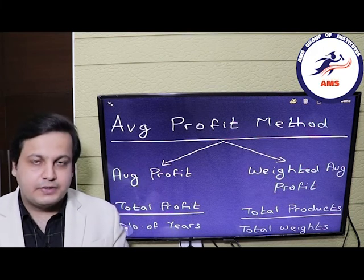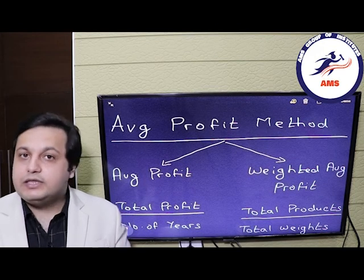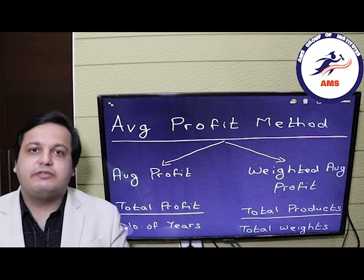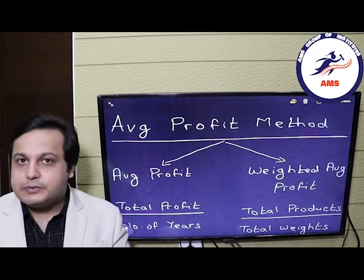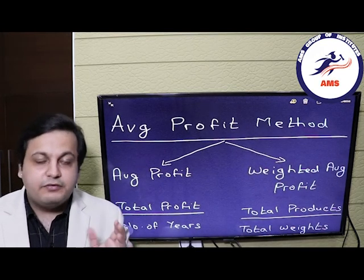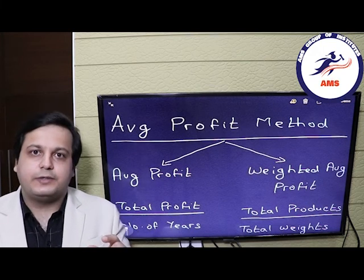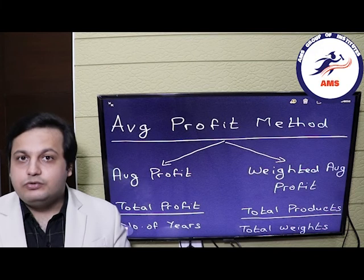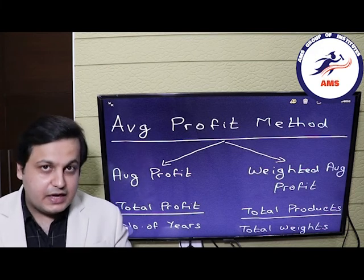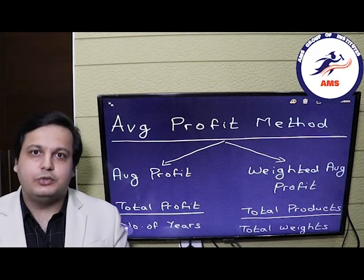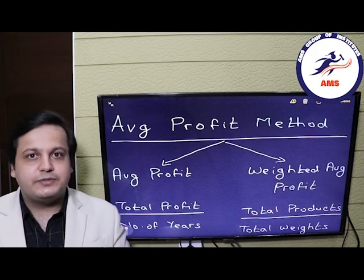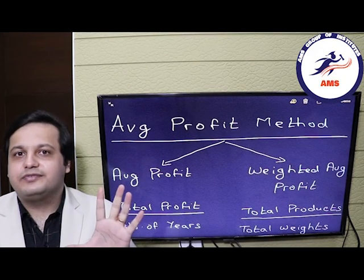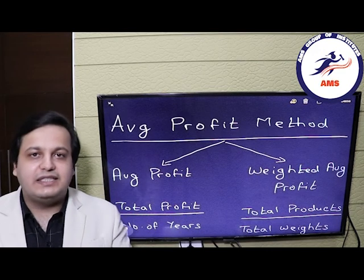Before starting these methods, you will be given information like: calculate the goodwill of the firm using 3 years purchase of the average profits, or using 5 years purchase of the weighted average profits. Whenever you hear these words — 3 years purchase or 5 years purchase — there will be a number followed by the words 'years purchase', and that number is important. For the average profits method, you calculate the average profits and multiply by 3 to get the goodwill. For the weighted average, you calculate the weighted average of the profits and multiply by 5 to get the goodwill.